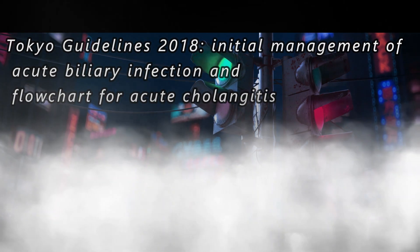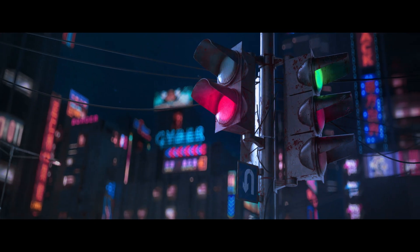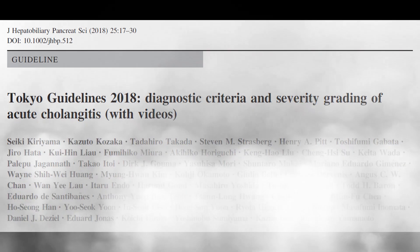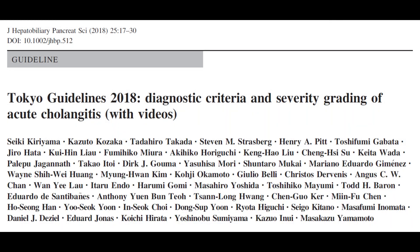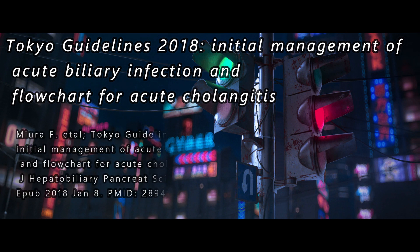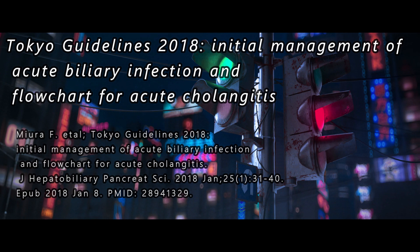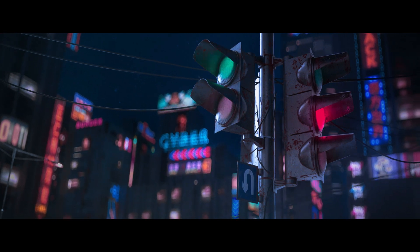These are the Tokyo Guidelines 2018, the latest edition with the diagnostic criteria and severity grading of acute cholangitis. I urge viewers to go through this paper, which is freely available on PubMed — I'll share the link in the description. All medical students and surgical trainees should understand these guidelines clearly. The first edition by the Yamamoto group was published in 2007, the second edition in 2013, and the latest edition in 2018.